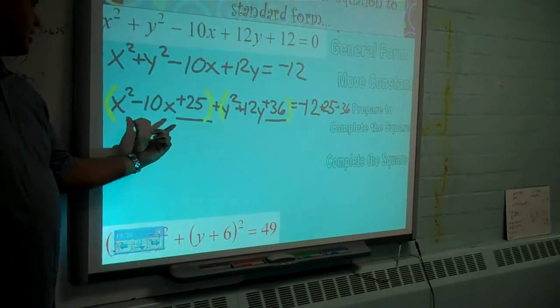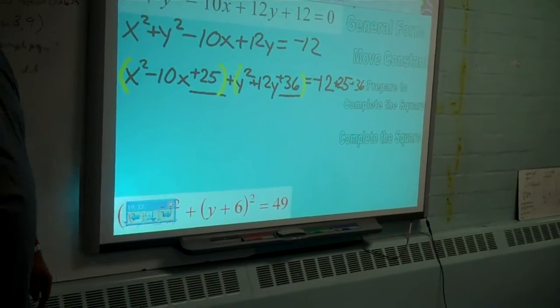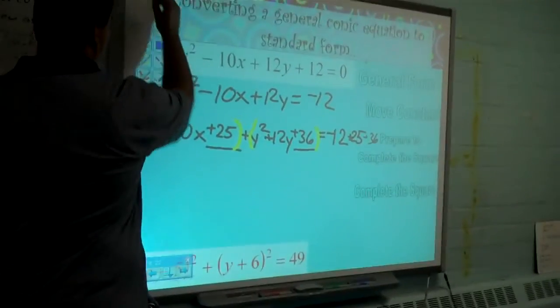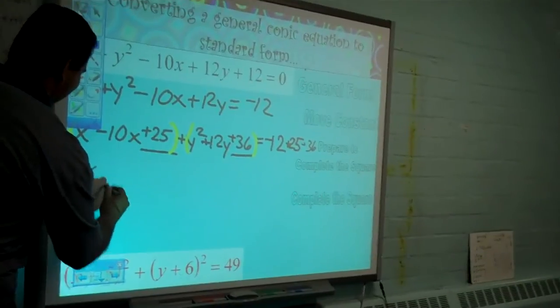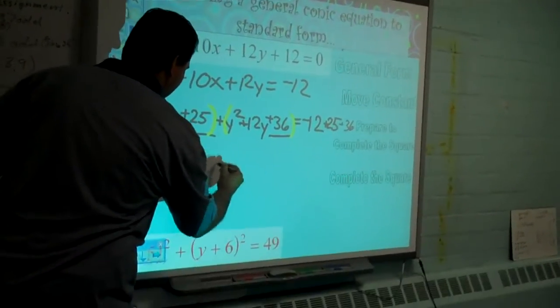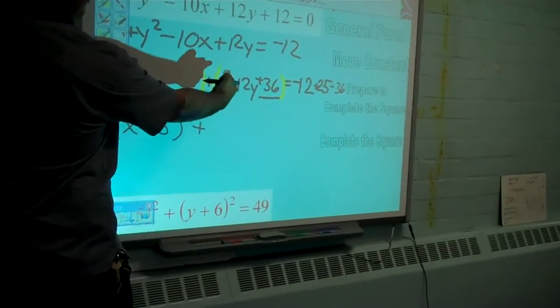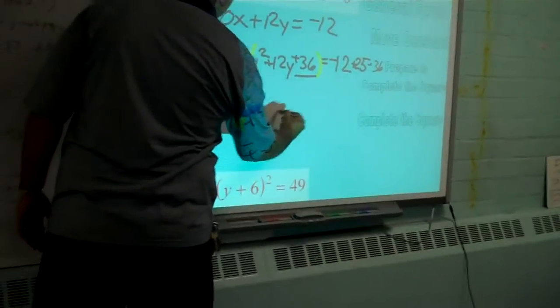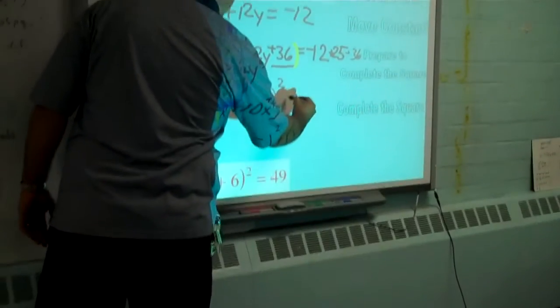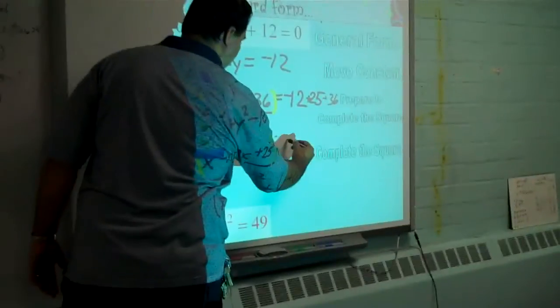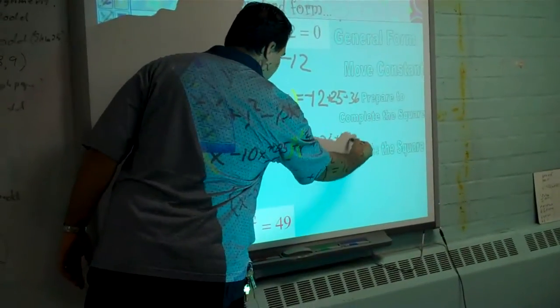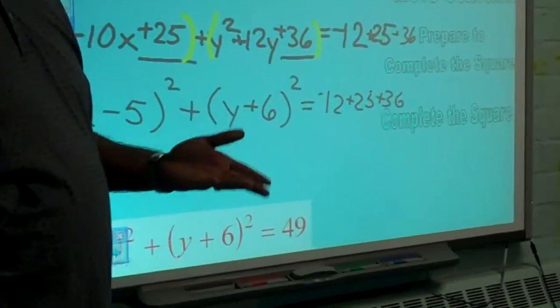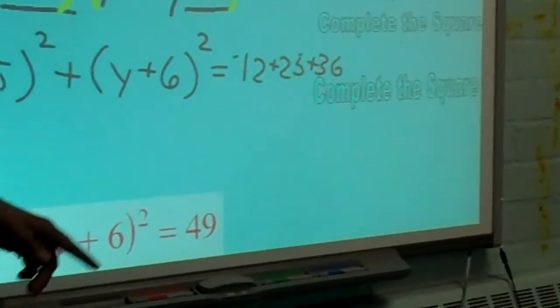Now what does this factor into? X squared minus 10x plus 25. X minus 5 squared. X minus 5 times x minus 5, which can be rewritten as x minus 5 squared. Plus y plus 6 squared. In this case, y squared plus 12y plus 36 factors out into y plus 6 squared. And that's going to equal negative 12 plus 25 plus 36. We could have done it in this step, but I just want to remind you that we're going to work on that side. Negative 12 plus 25 is 13. 13 plus 36 is 49.